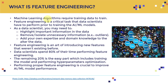Feature engineering is a critical task that data scientists must perform prior to training AI/ML models. As a data scientist, you may need to first highlight important information in the data, remove and isolate unnecessary information — for example, if you find outliers, you need to get rid of them — and also apply your own domain knowledge and expertise to alter the data appropriately.